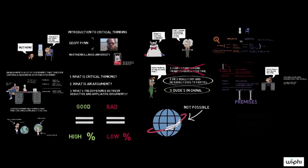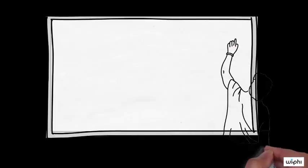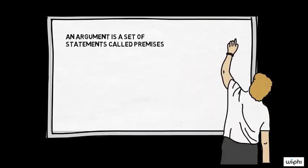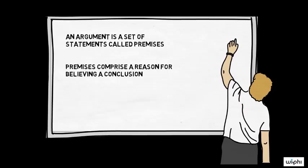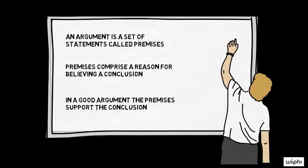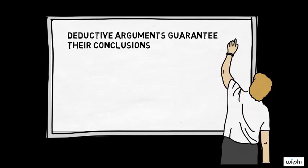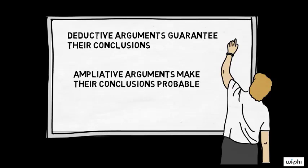We'll talk quite a bit more about different tools for evaluating both ampliative and deductive arguments in future lessons. Summing up this lesson: critical thinking is making sure that we have good reasons for our beliefs, where a good reason is one that makes the belief probable or likely to be true. An argument is a set of statements — premises — that together comprise a reason for another statement, the argument's conclusion. In a good argument, the premises support their conclusions. A deductive argument is one where the conclusion is guaranteed by the premises — if the premises are true, then the conclusion must be true. An ampliative argument is one where the premises don't guarantee the conclusion, but they do make it probable, so they can still provide good reason for believing the conclusion.